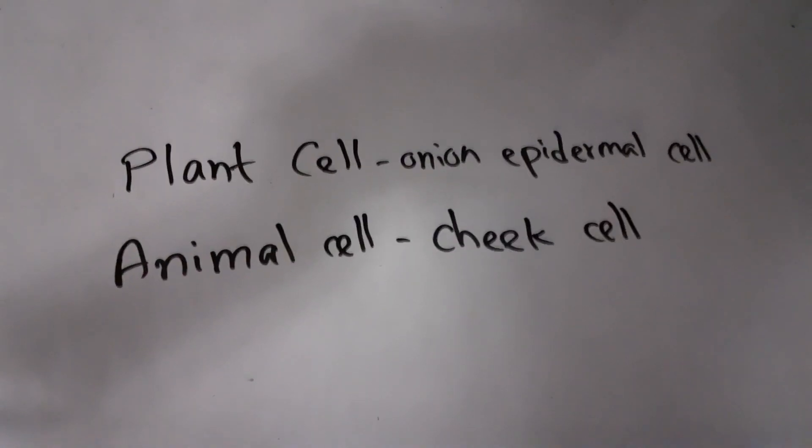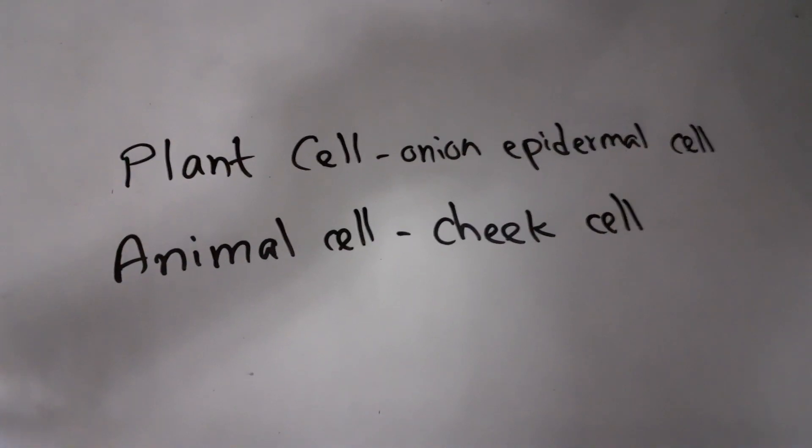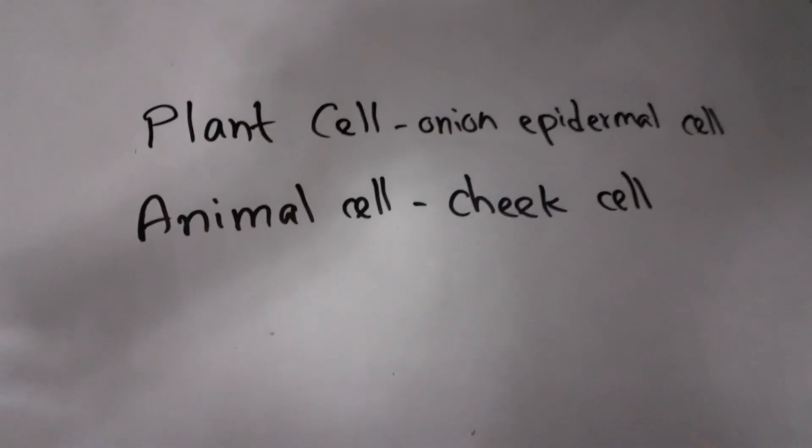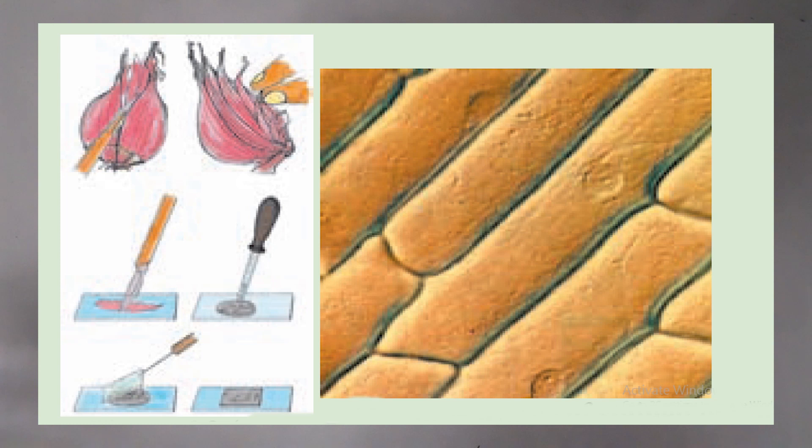To observe a plant cell, we use onion epidermal cells. First you have to tear a very small thin piece of onion epidermal cell, then keep it on a slide, put a water droplet, close it with a cover slip, and then you are ready to observe it through the microscope.